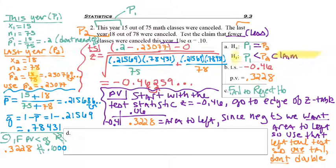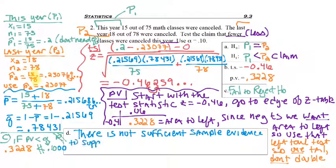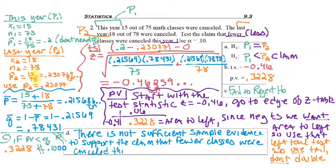Our claim is H1. We fail to reject H-naught, so our concluding sentence begins: there is not sufficient sample evidence to support the claim that fewer classes were canceled this year. You could say than last year to be a more complete picture, but I'm fine if you guys just take it how it was asked.